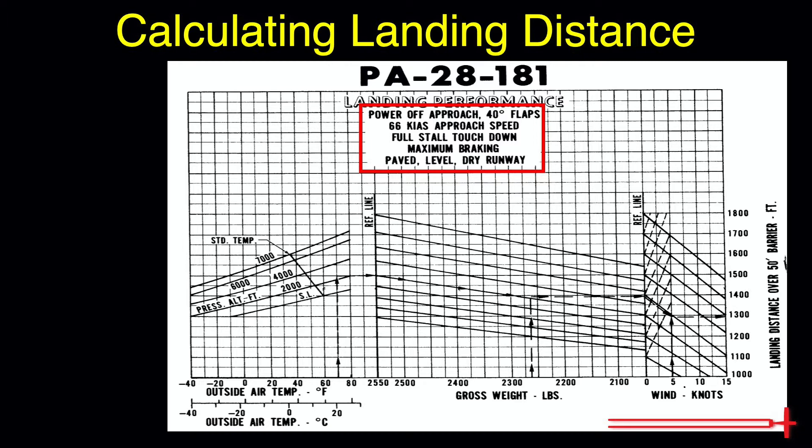Failure to reduce the power or apply brakes, precipitation, or an unpaved or sloping runway would all affect these distances.